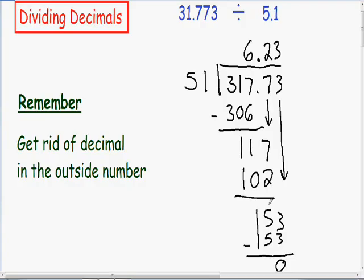So we have a remainder of 0, which means that we can stop. So now we've divided 31.773 by 5.1, and we have a final answer of 6.23.